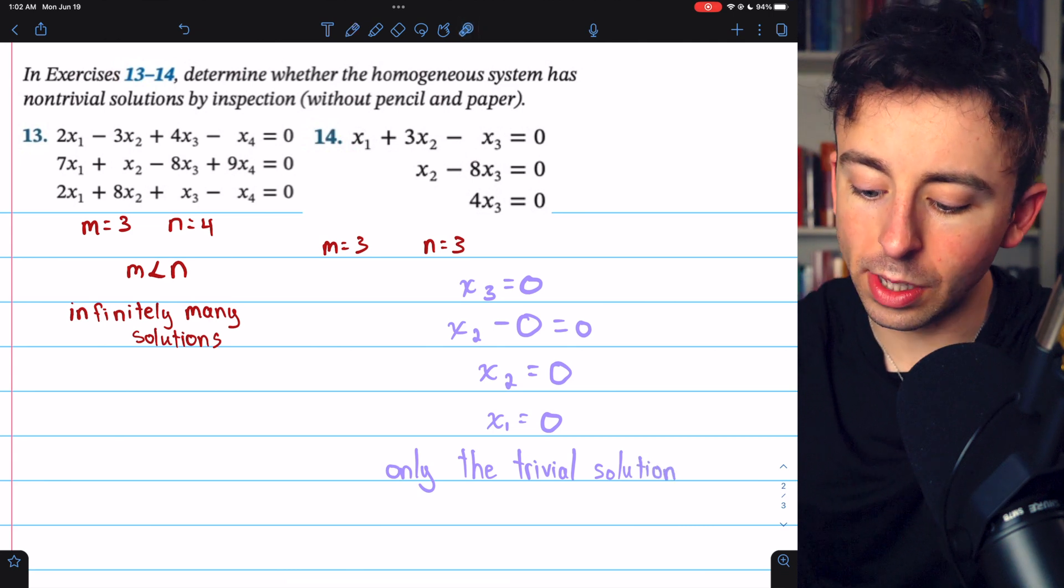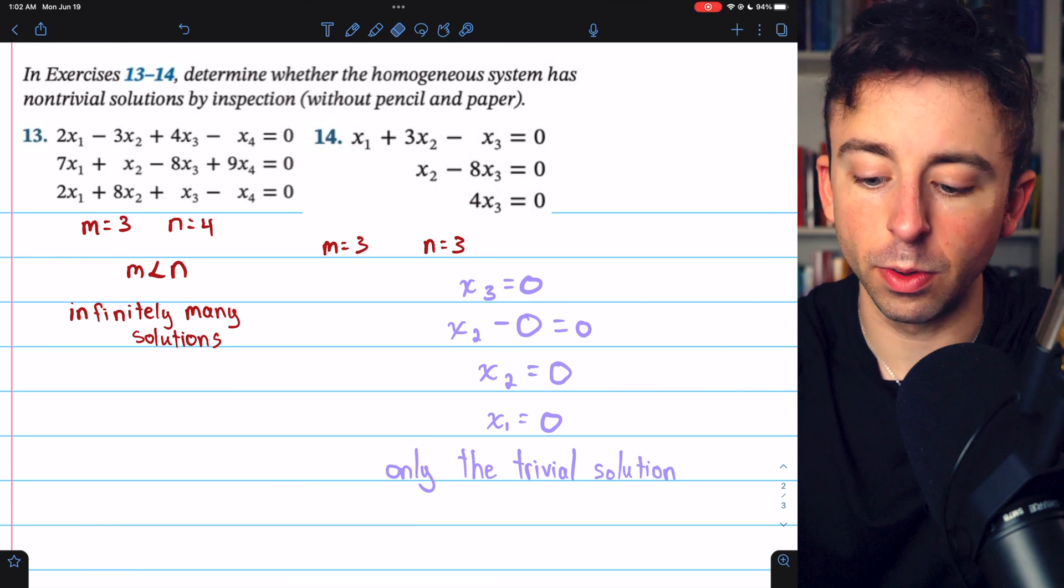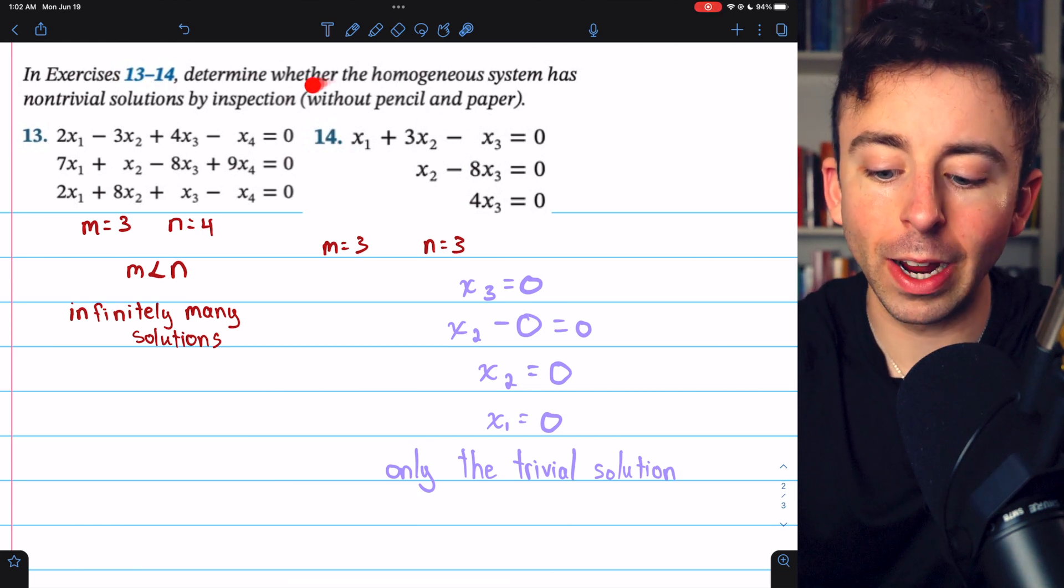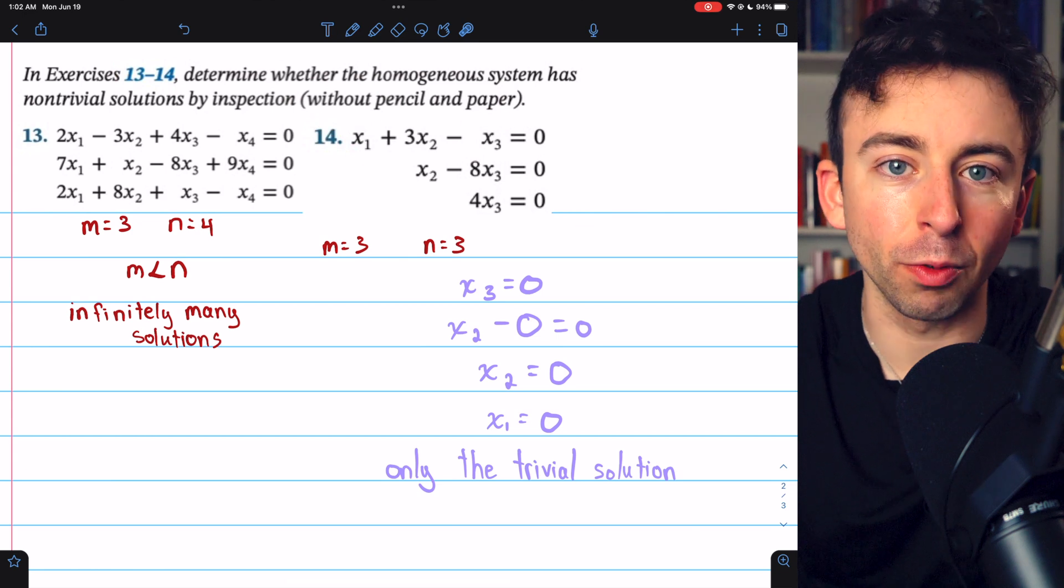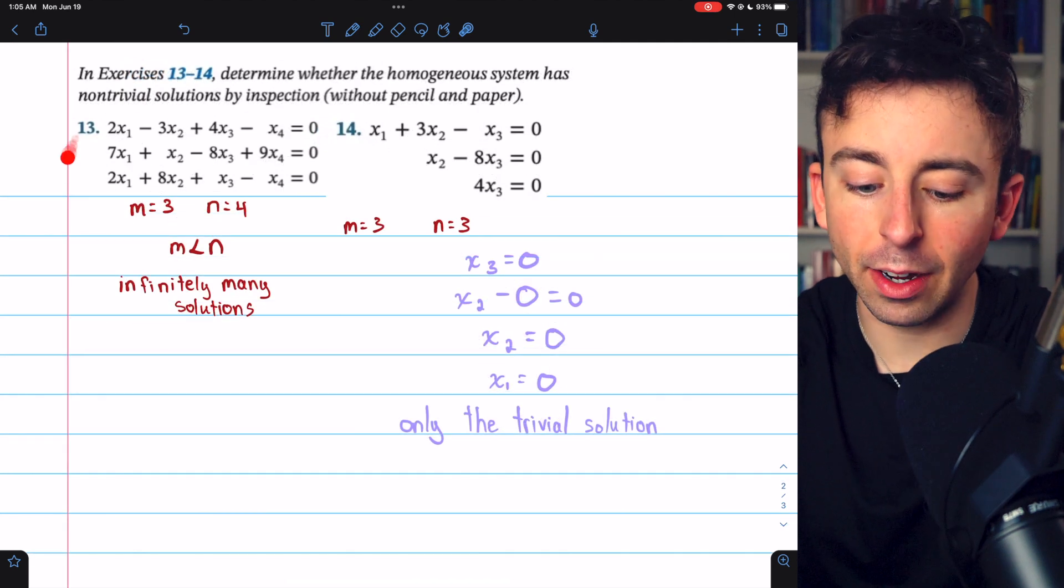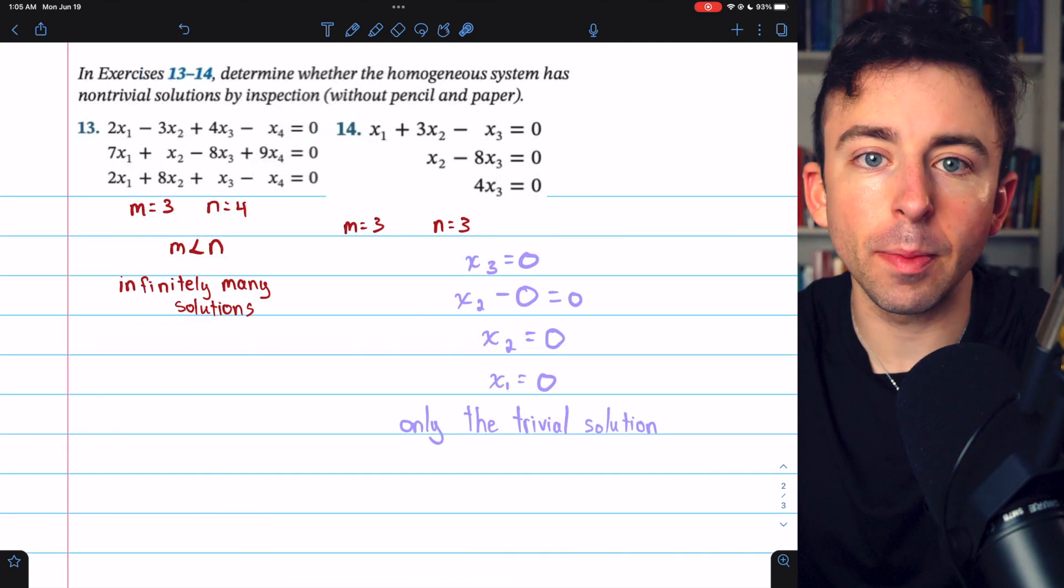So while exercise 13 had infinitely many solutions, exercise 14, we only have the trivial solution to this homogeneous linear system. And I guess I did break the rules by writing some stuff down, but that's just for clarity. It's very easy to do these without writing any of this down.